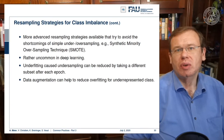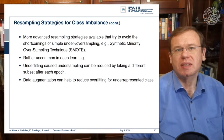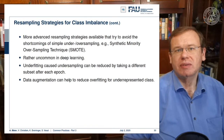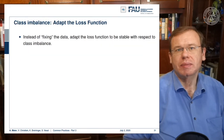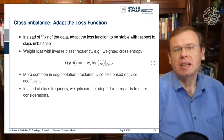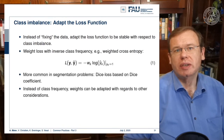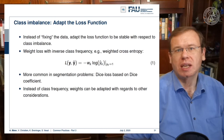You essentially augment more of the samples that you have seen less frequently. Instead of fixing the data, you can also try to adapt the loss function to be stable with respect to class imbalance.